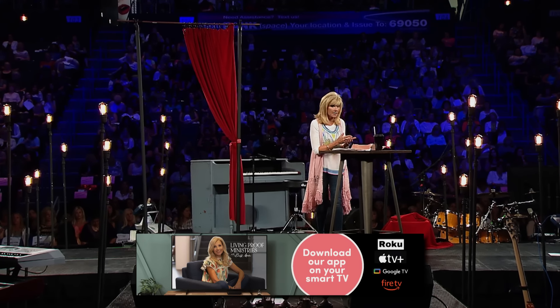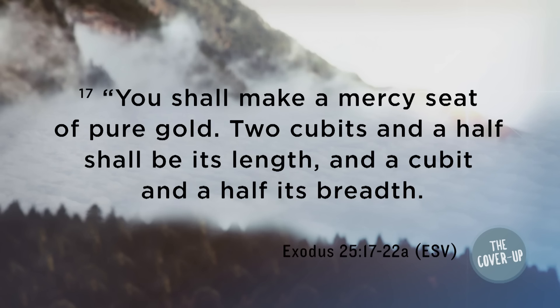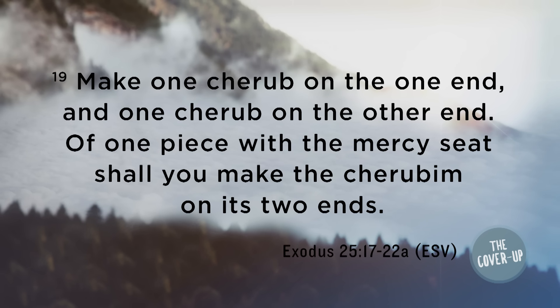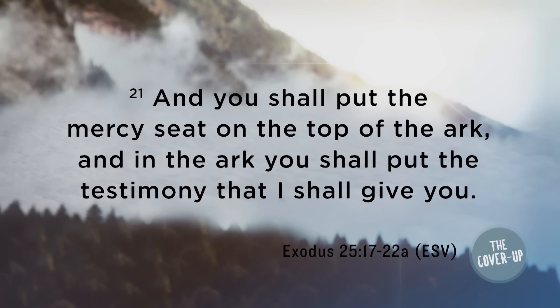In Exodus 25, God gives instructions for how to build the tabernacle where his glory will literally settle and cover it. Back in the Holy of Holies, they are to place an ark of the covenant, and on top of it there is a lid referred to as a mercy seat. Exodus 25:17 says, 'You shall make a mercy seat of pure gold, two and a half cubits its length and a cubit and a half its breadth.' And two cherubim of gold, hammered work, on the two ends of the mercy seat, spreading their wings above, overshadowing it.